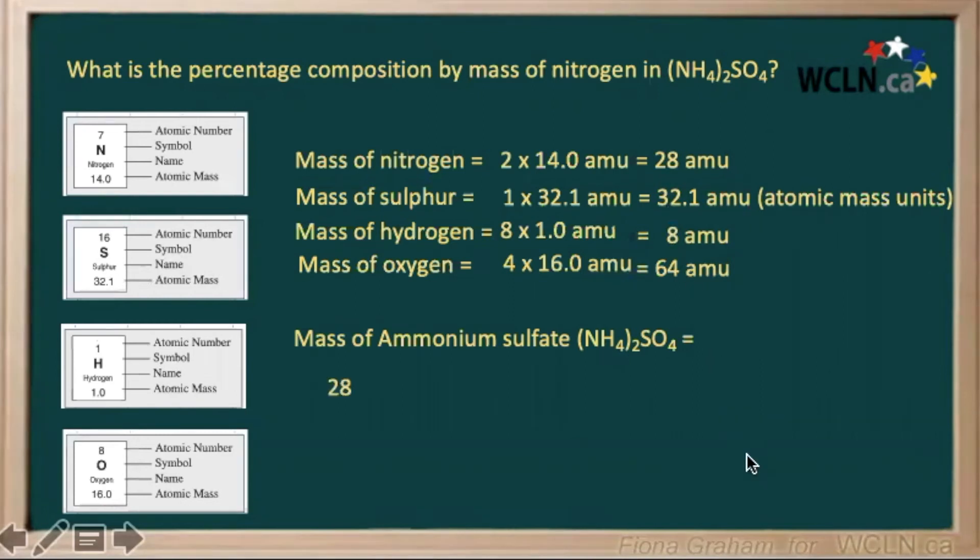So the mass of our ammonium sulfate would be the total of all of these masses: 28, plus 8, plus 32.1, plus 64, giving us a total of 132.1 atomic mass units.